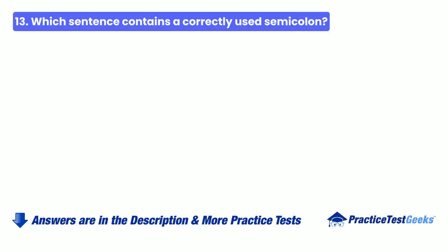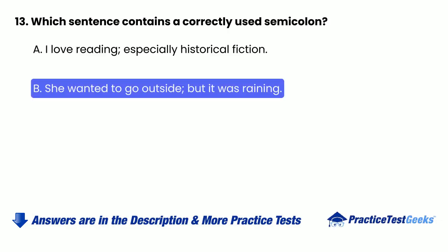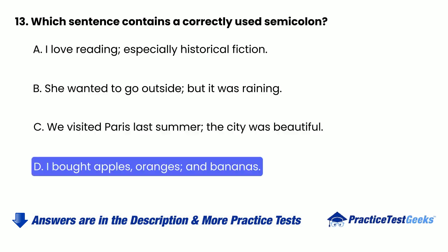13. Which sentence contains a correctly used semicolon? A. I love reading, especially historical fiction. B. She wanted to go outside, but it was raining. C. We visited Paris last summer; the city was beautiful. D. I bought apples, oranges, and bananas.